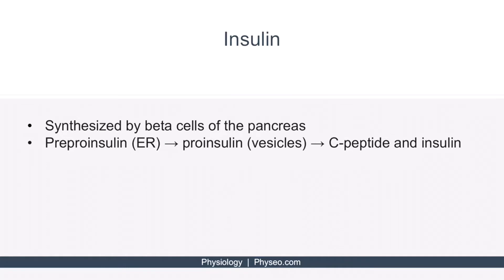Insulin is synthesized by beta cells of the pancreas. Within these cells, there are several steps before the final product insulin is made. First, pre-proinsulin is made in the endoplasmic reticulum, or ER. This is taken from the ER and packaged into vesicles as pro-insulin. Pro-insulin is then cleaved into C-peptide and insulin and secreted into the blood together.